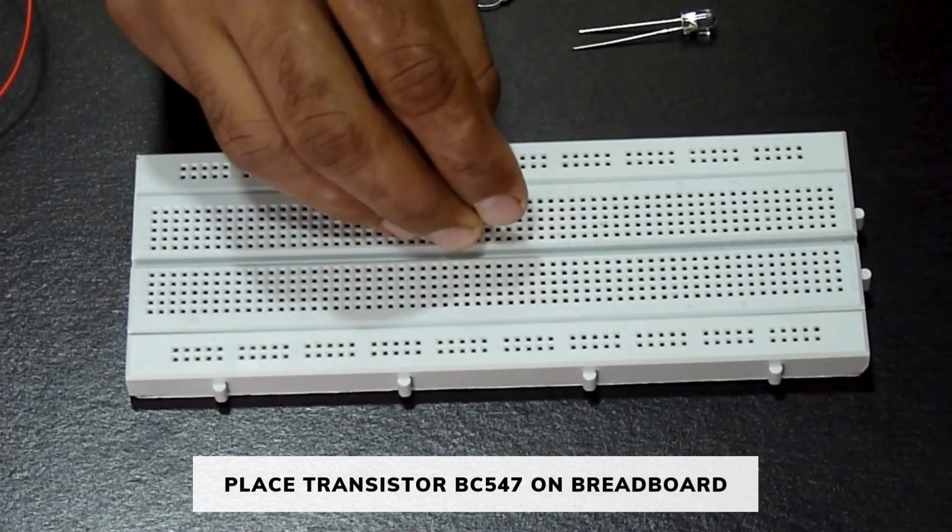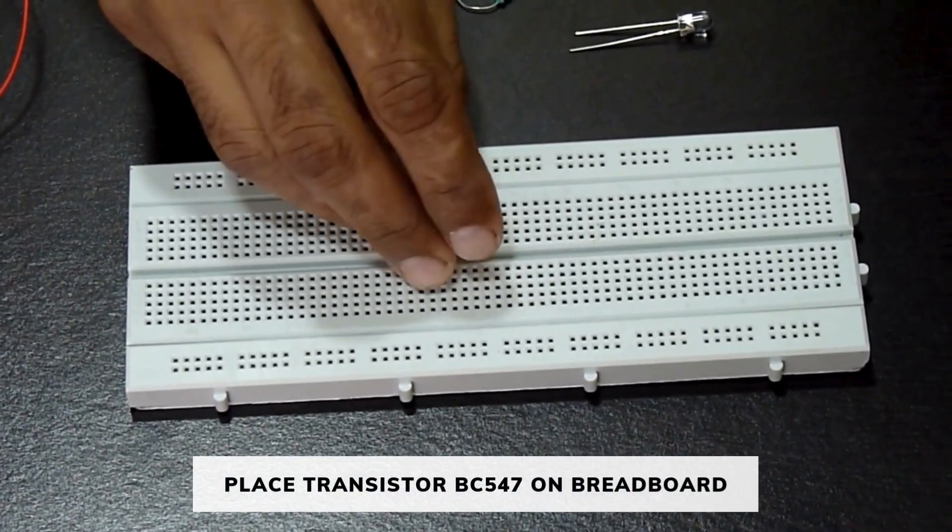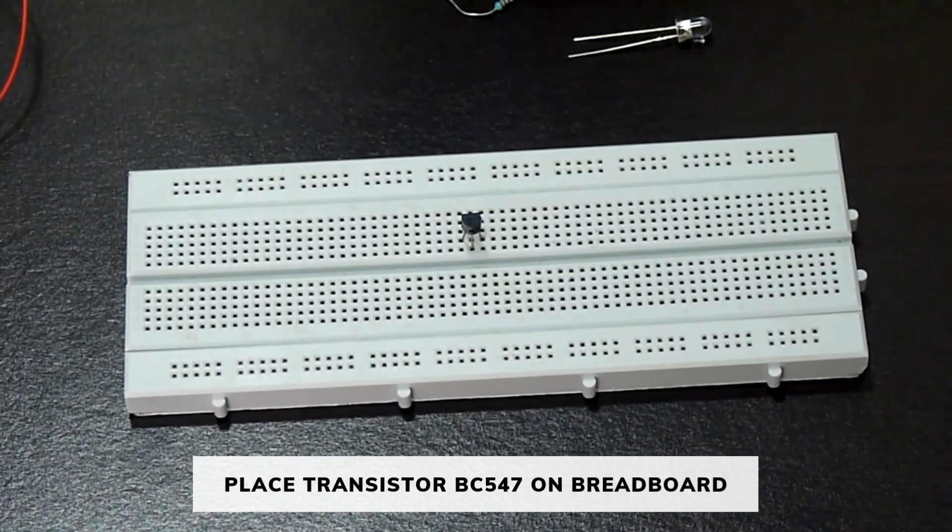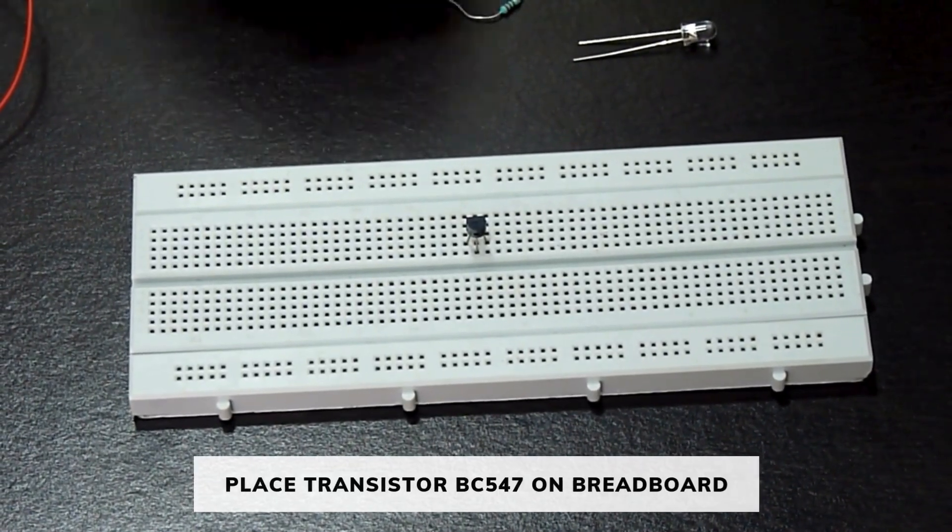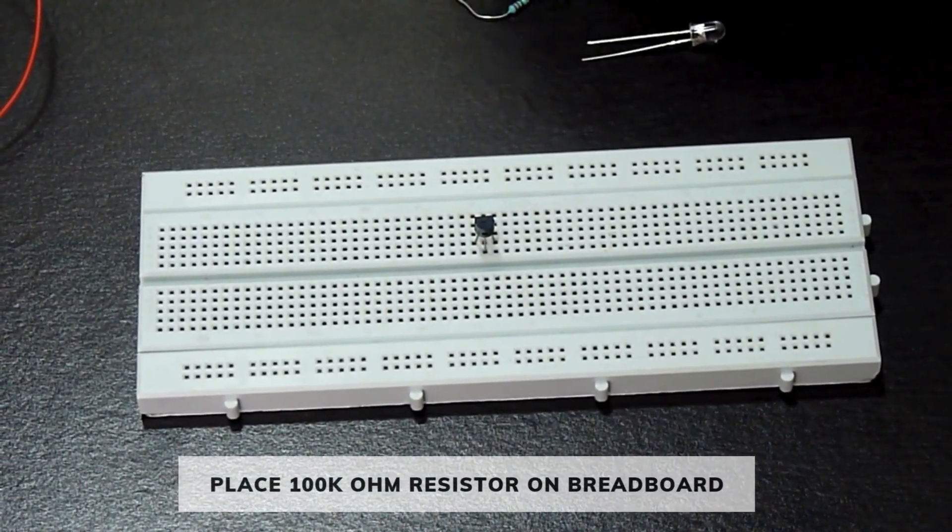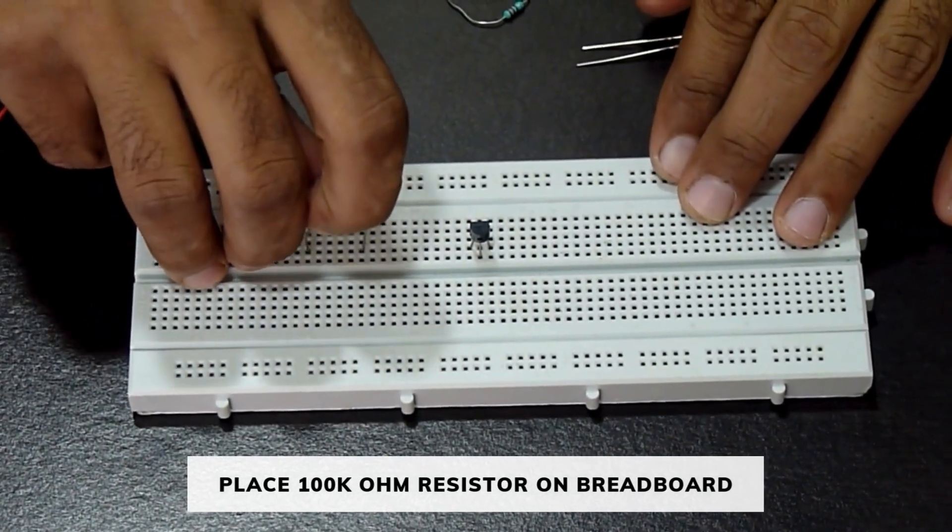First, we will place the transistor BC547 on the breadboard. Then, we will place the 100 kilohm resistor on the breadboard.